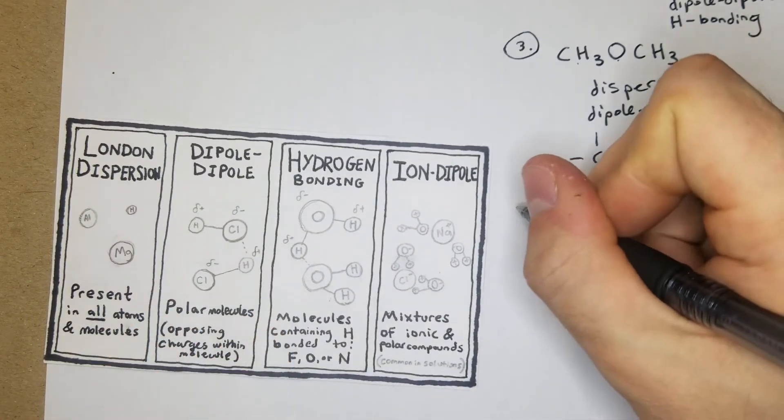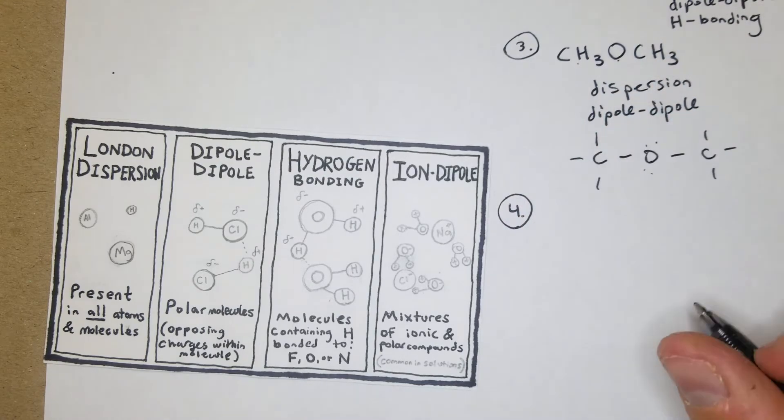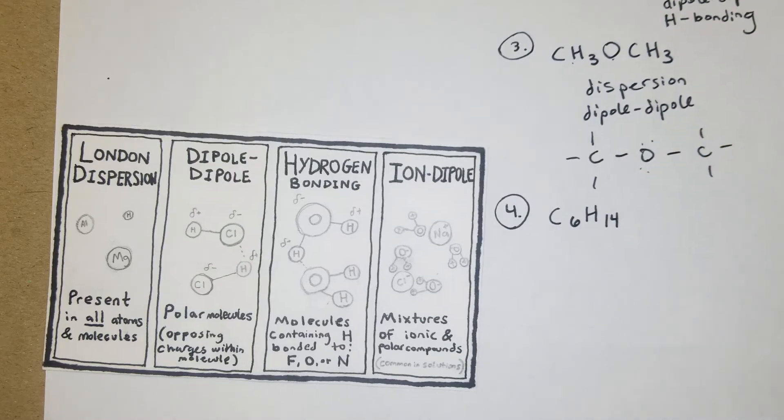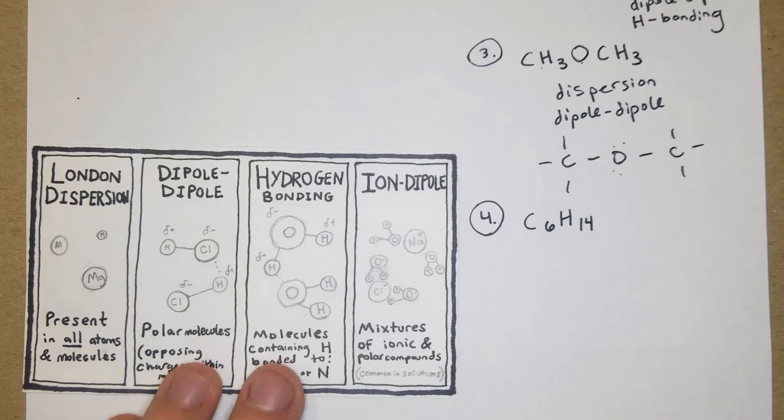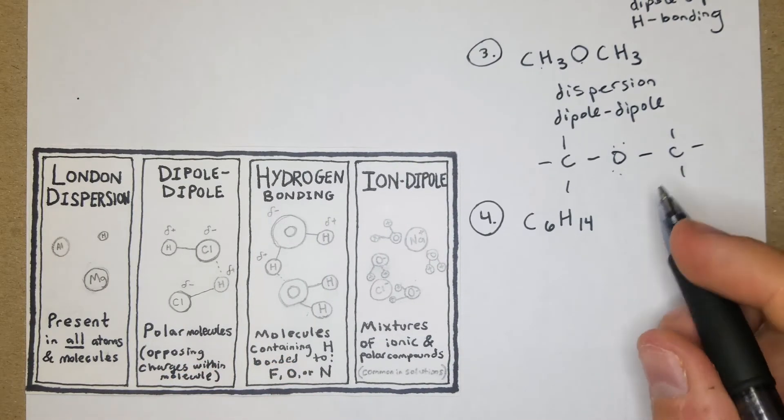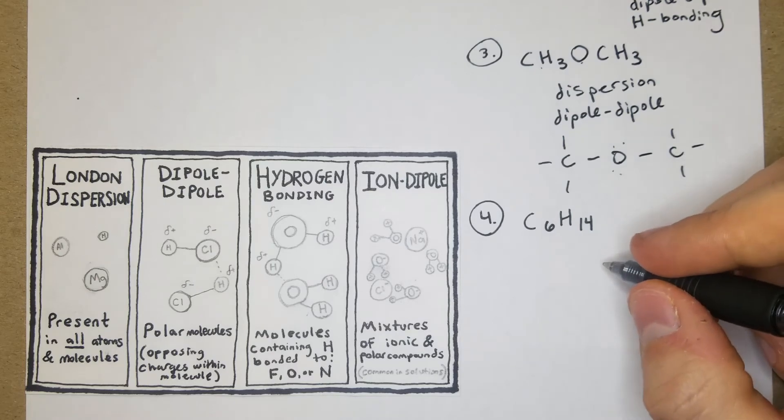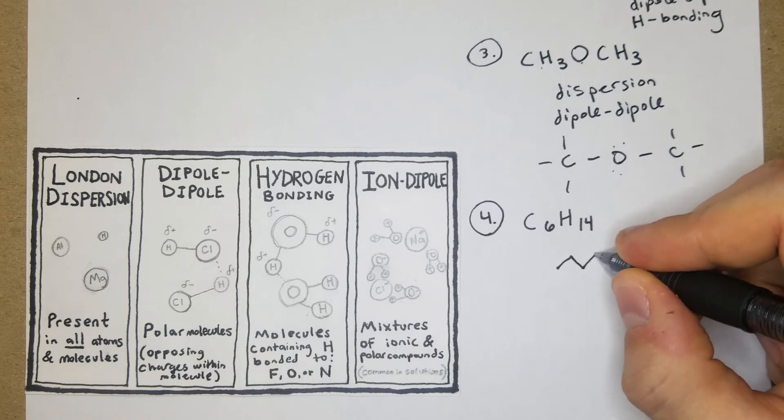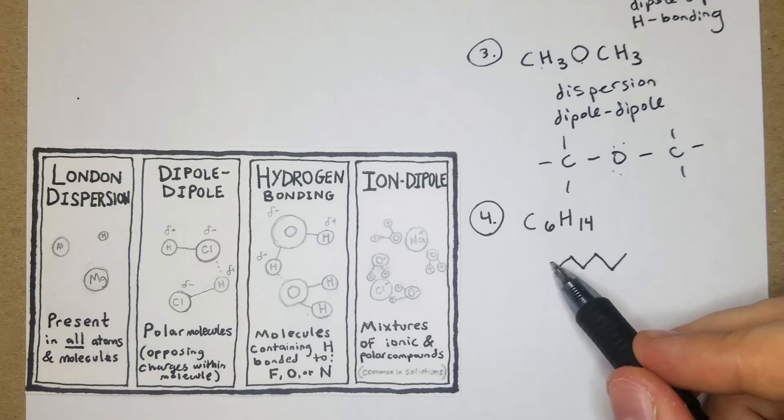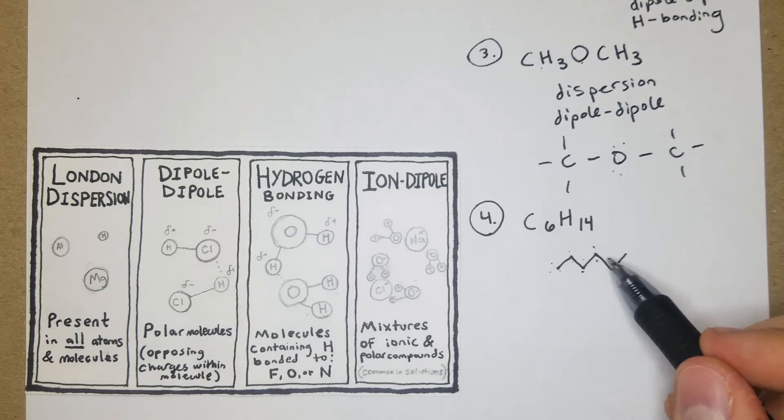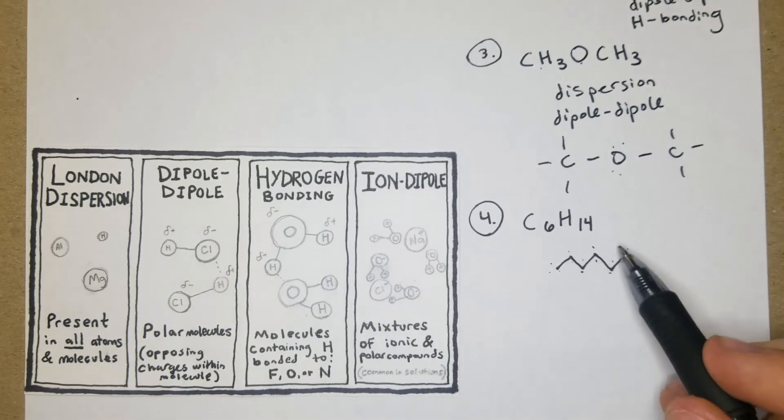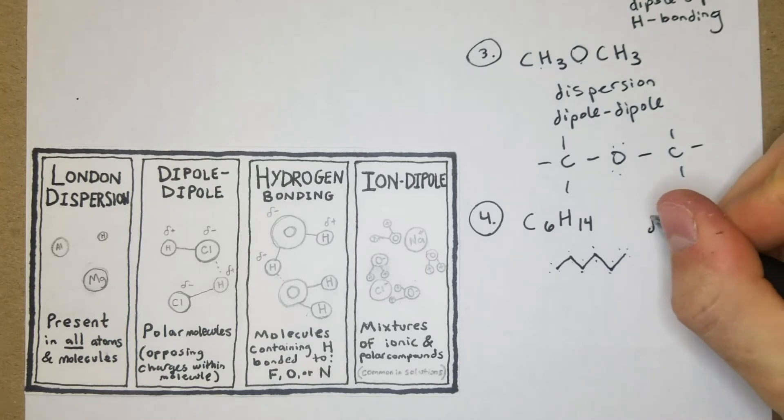For number 4, we're going to have C6H14. That's a much larger molecule than some of the other ones that we've done so far, it's quite a large molar mass comparatively. However, it's going to be pretty straightforward - you can just draw it: 1, 2, 3, 4, 5, 6, and then you can just count up all the hydrogens: 1, 2, 3, 4, 5, 6, 7, 8, 9, 10, 11, 12, 13, 14. Right there from this shape and everything you can tell that this is just going to be dispersion.